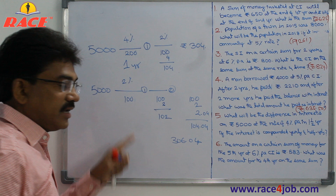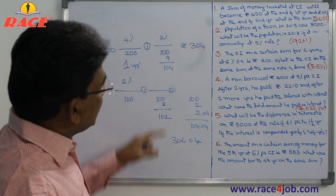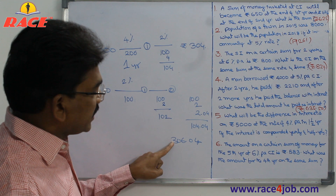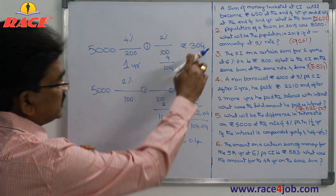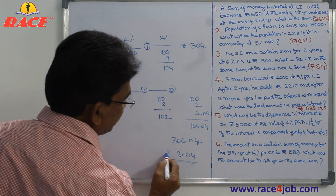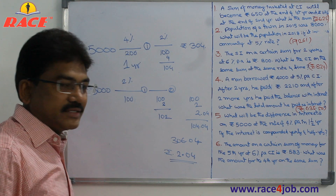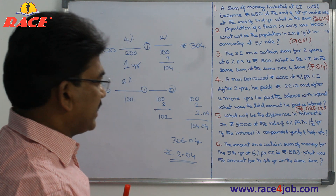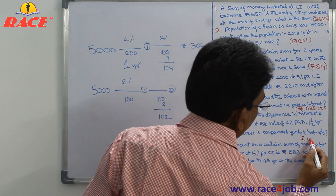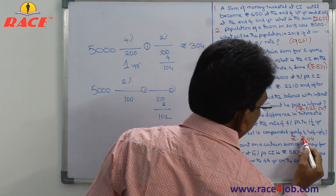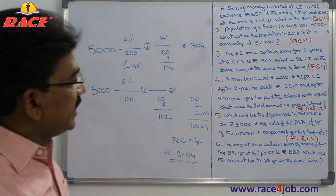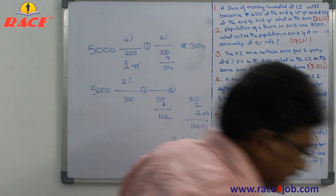If calculated yearly, the interest is 304 rupees. If calculated half-yearly, it is 306.04. The difference is 2.04 rupees. That is the difference between calculating half-yearly and yearly.